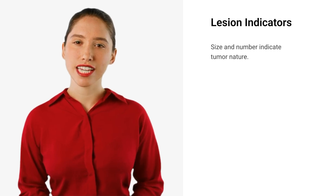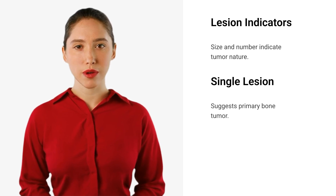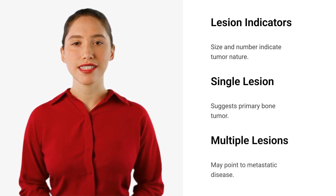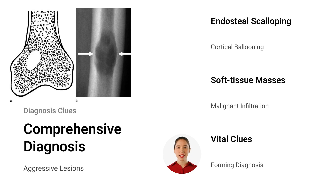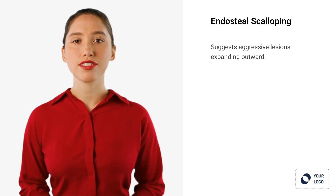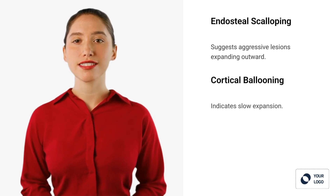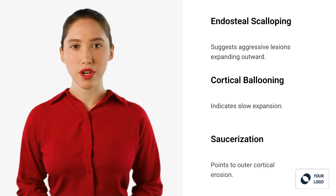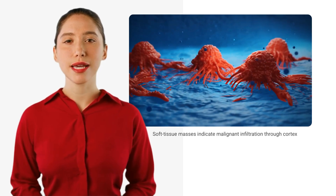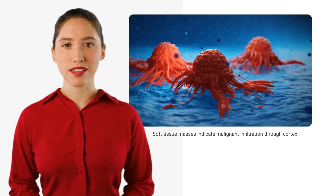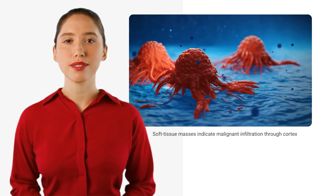Lesion size and number can indicate tumor nature: a single lesion often suggests a primary bone tumor, while multiple lesions may point to metastatic disease. Soft tissue components often suggest malignancy. Endosteal scalloping and cortical ballooning indicate aggressive lesions, while soft tissue masses suggest malignant infiltration. Endosteal scalloping suggests aggressive lesions expanding outward; cortical ballooning indicates slow expansion, while saucerization points to outer cortical erosion.